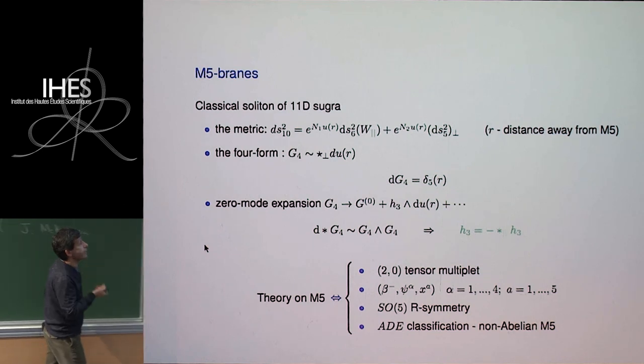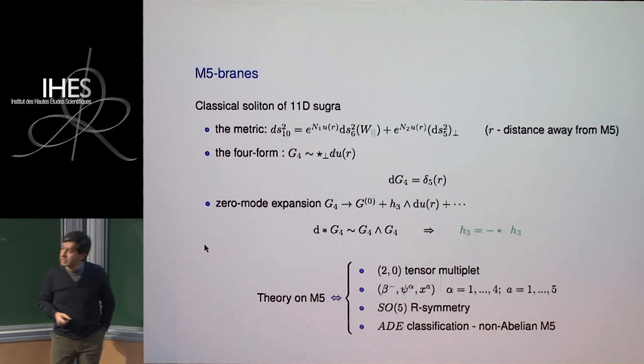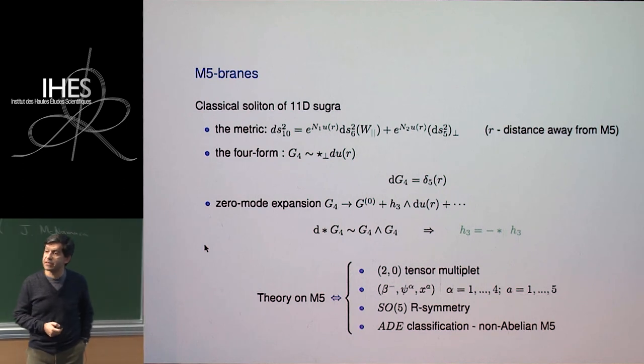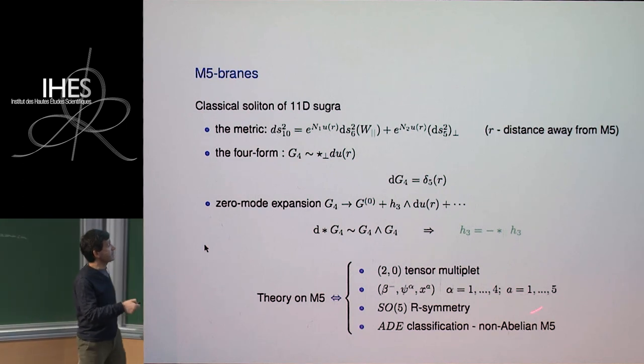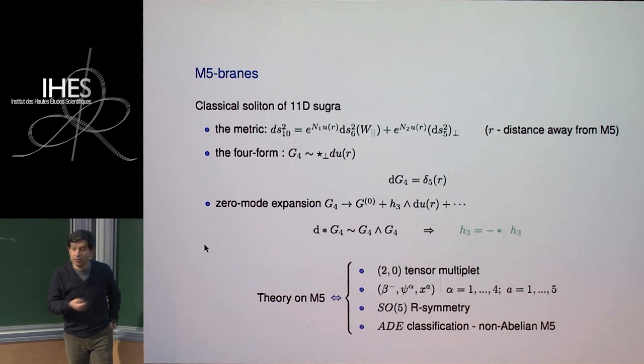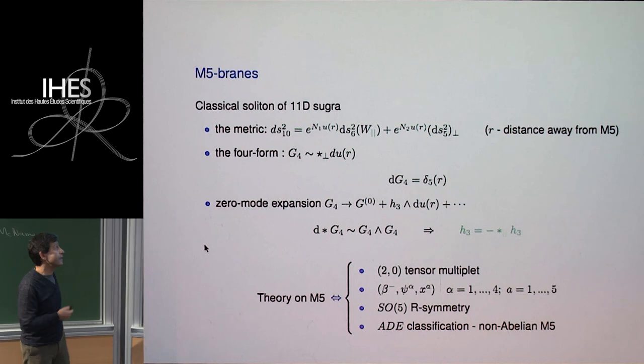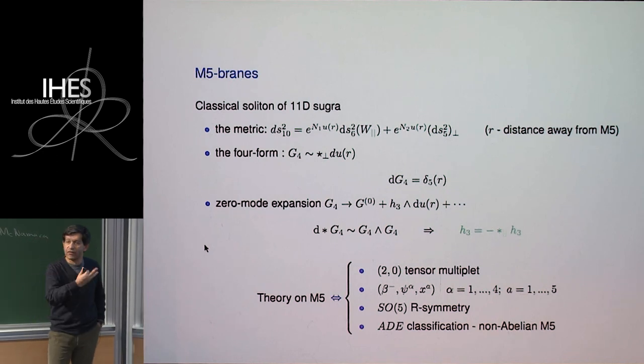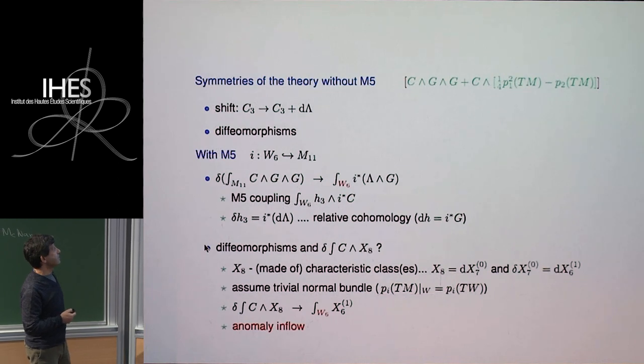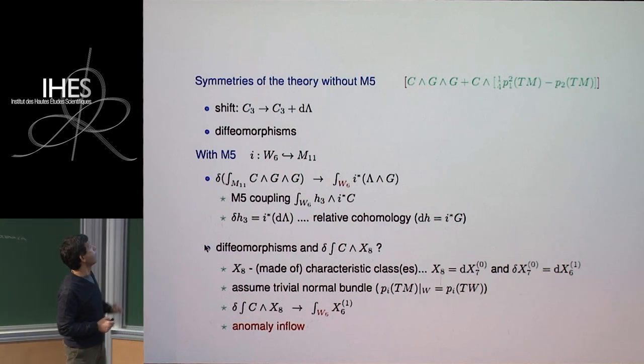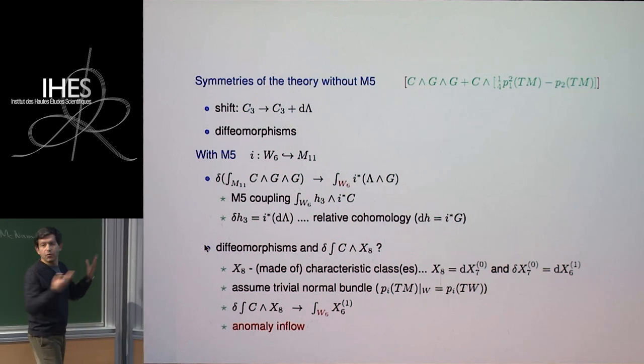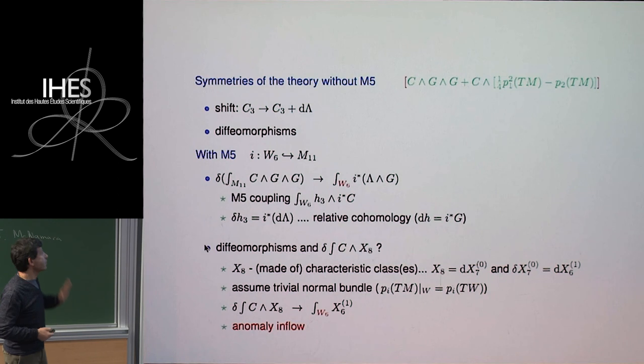And the multiplet in question is a tensor multiplet. So the field content is given by a B menu, a tensor field. However, its field strength is constrained and it is self-dual. And then there are fermions and there are five scalars which parameterize the five transverse directions. This multiplet has an SO5 R symmetry. There are just five scalars which are in the fundamental of SO5 and the fermions live in the spinner representation of SO5. And what we know is, in principle, we don't know much about the non-abelian theory, but in principle, it does admit ADE classification. So there exists non-abelian brains. And this is still a direct description of this is still rather mysterious.